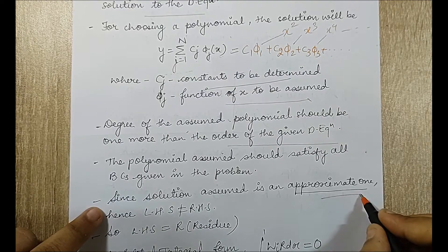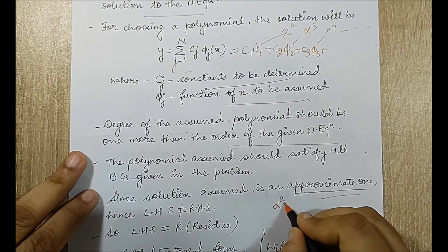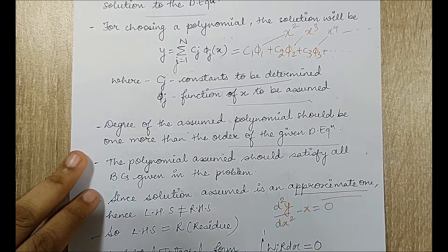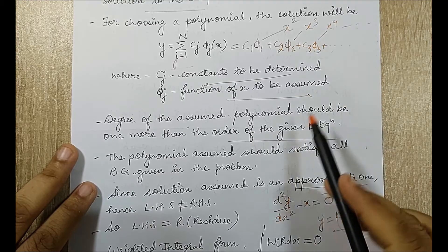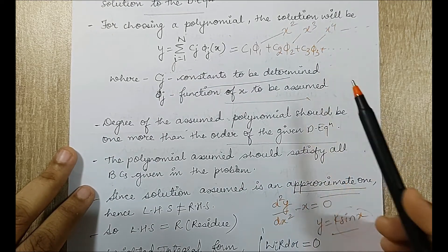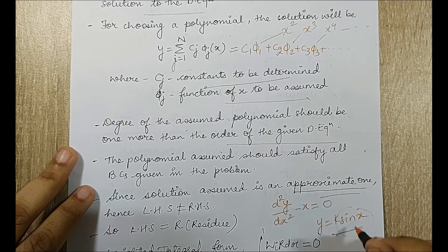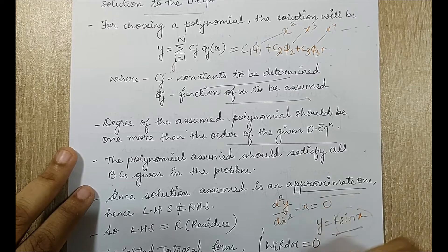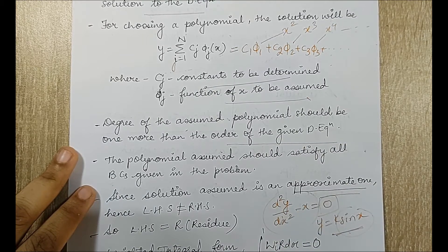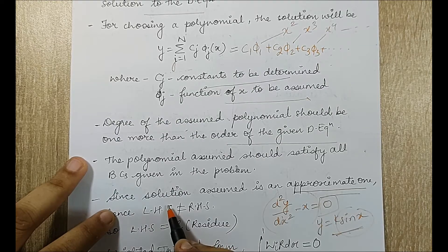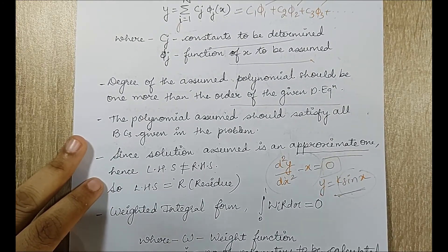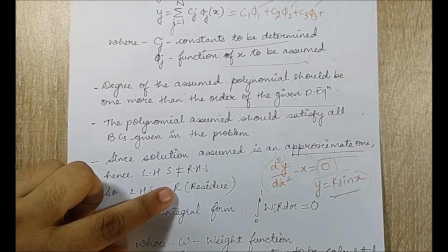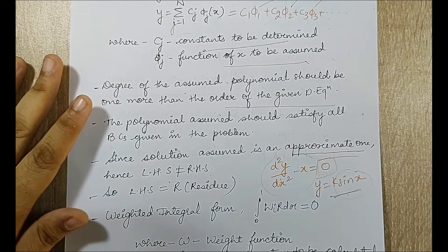Since the solution is approximate, we cannot say the differential equation equals zero. For example, if y equals k·sin(x) is an assumed solution and I substitute it into the equation, I should not get LHS equal to RHS — meaning RHS equal to zero. Instead I get some number as a residual error. This is the residue R: since the solution assumed is approximate, LHS will not equal RHS, and that difference is termed the residue R.